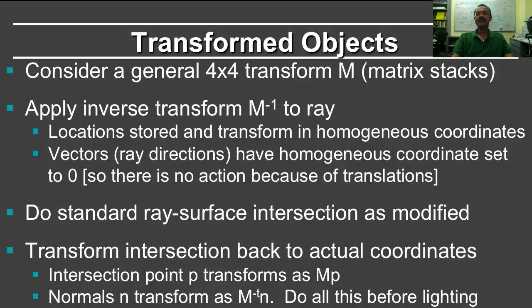If the homogeneous coordinate is 0, the main activity is that translations will not act on the vector. And in fact, if you translate the location of a ray, only the origin changes, the direction does not. So that's the correct behavior. You do the standard ray surface intersection. And then finally, you have to transform the intersection back to the actual coordinates. The intersection point P that you computed in this transformed space, now you apply MP.